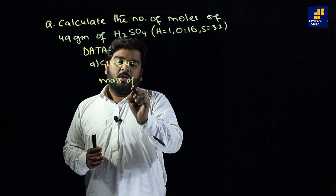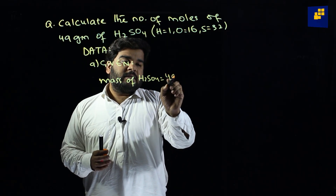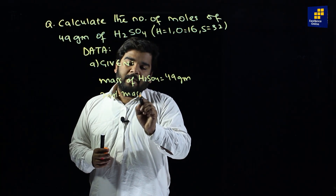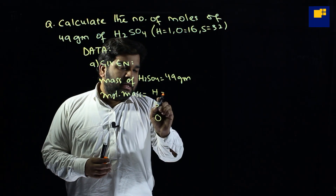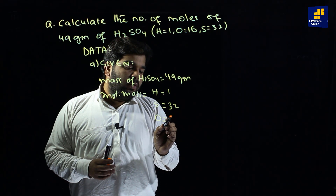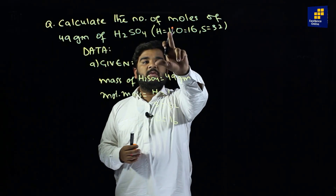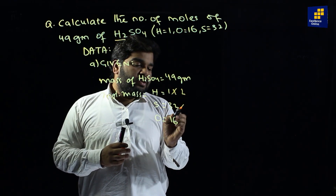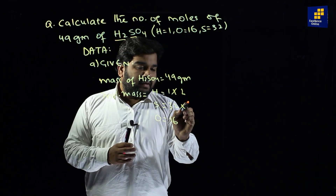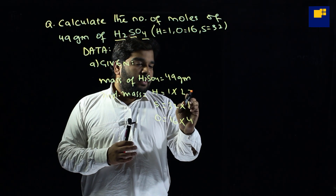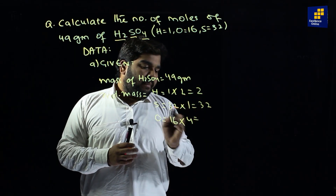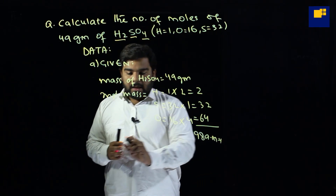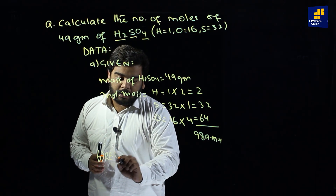Mass of H2SO4 diya gaya hai — that is 49 grams. Ab molecular mass calculate karte hain: hydrogen ka mass 1, sulfur ka 32, oxygen ka 16. Formula mein hydrogen 2 hai to 2×1=2, sulfur 1 hai to 1×32=32, oxygen 4 hai to 4×16=64. Jab combine karein to molecular mass aata hai 98 amu.